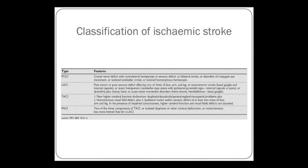Classification of stroke. This is called the Bamford classification, looking at the symptoms, signs, and clinical presentation of the stroke. It helps you determine the underlying anatomy, which blood vessels are affected, and the severity. There are four types: posterior, lacunar, total anterior, and partial anterior.